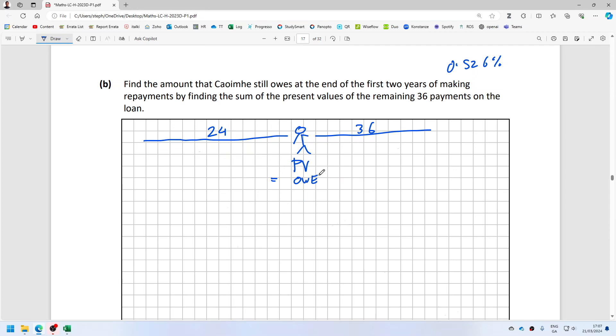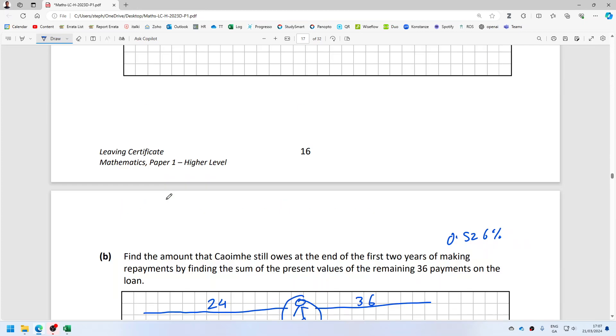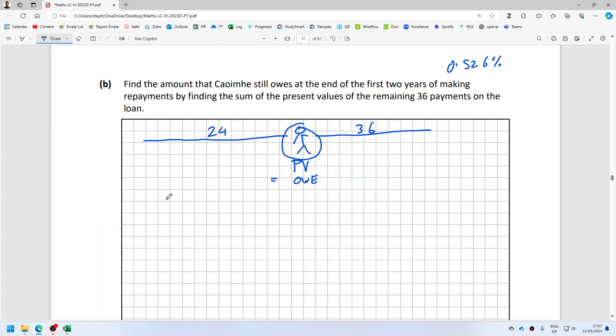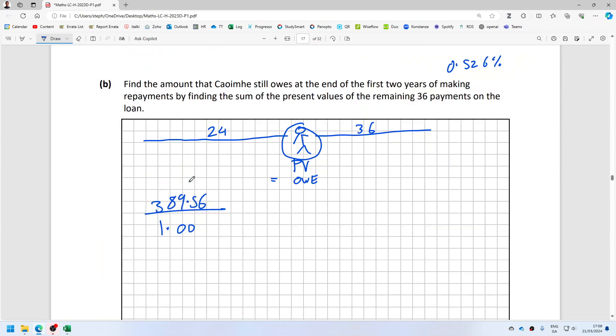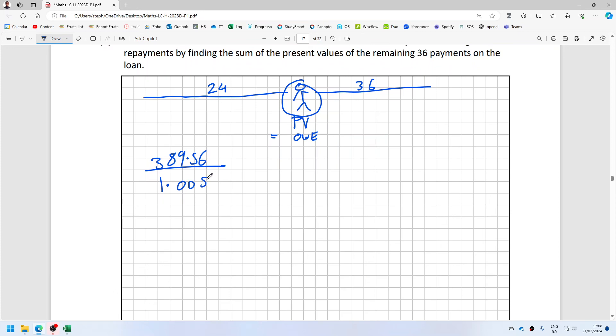So let's calculate the present value from here. The first payment of 389.56, that's one month away, so that's divided by 1.00526. Then that next payment, which is two months away, gets divided by 1.00526 squared, and so on.